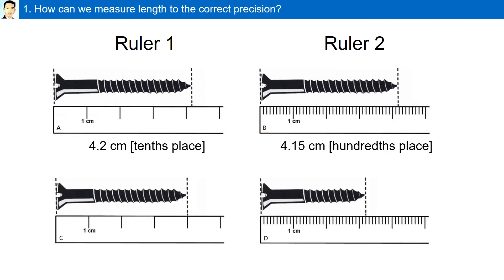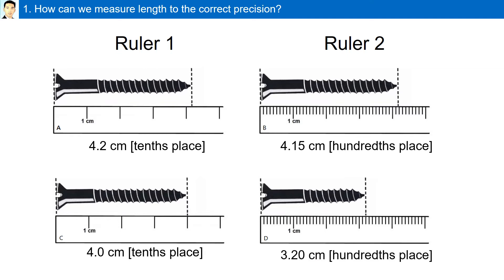In two other examples: example C, the screw is exactly at 4 centimeters. However, this ruler can measure to the tenth place, therefore our answer must be reported to the tenth place: 4.0 centimeters. In example D, the screw is exactly at 3.2 centimeters. However, this ruler can measure to the hundredth place, therefore the answer will be reported as 3.20 centimeters.